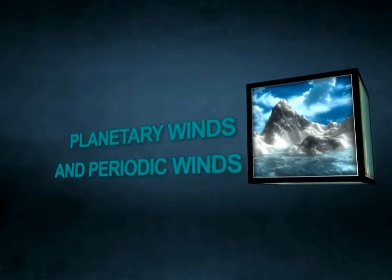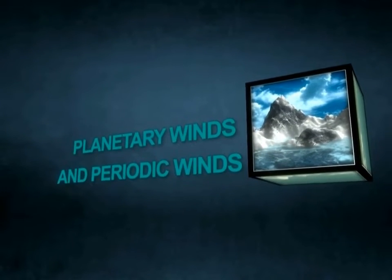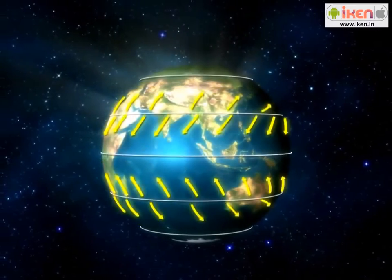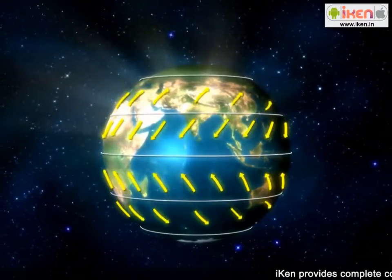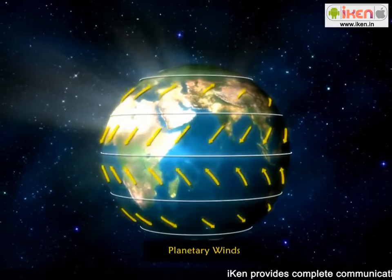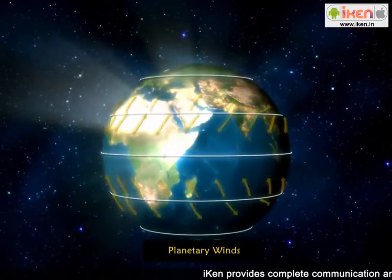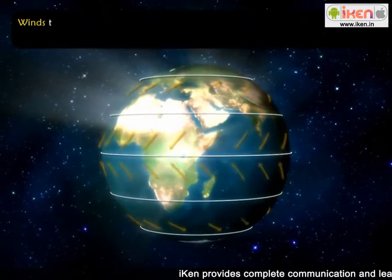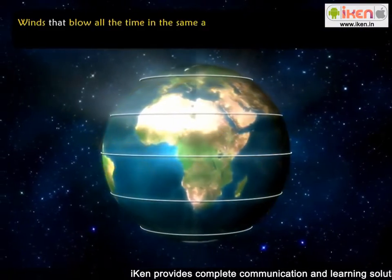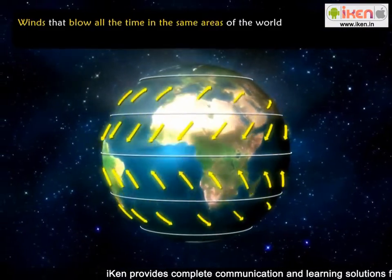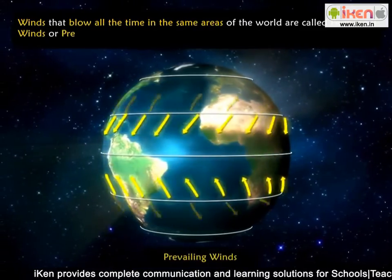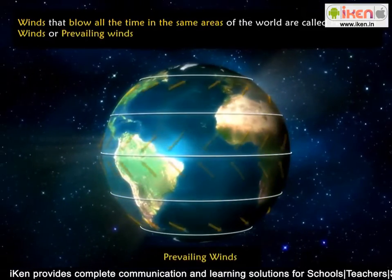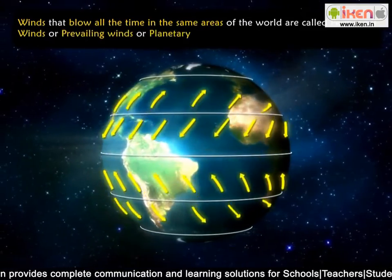Planetary Winds and Periodic Winds. Three major wind systems of the world are recognised. The first one is planetary winds. Winds that blow all the time in the same areas of the world are called permanent winds, prevailing winds, or planetary winds.